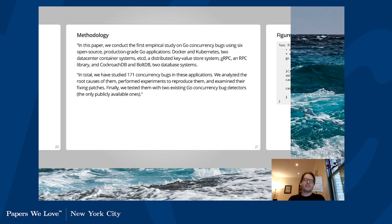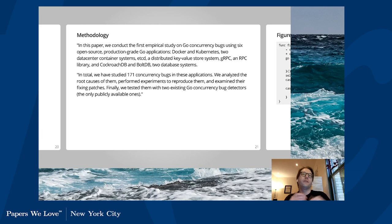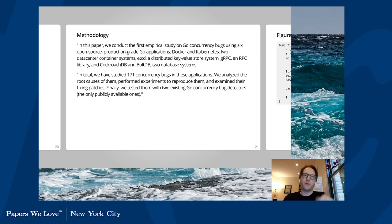They found 171 concurrency bugs in these applications, analyzed the root causes, performed experiments to reproduce them, and examined the patches that fixed them. They then tested two existing concurrency bug detectors to see if they could catch them. The method is not to go through code websites and find bugs, but to look at bugs that have been found in public sources and look at how they were fixed. They're relying on the quality of the community who found bugs in the first place — which explains why they chose large code bases with more eyeballs catching bugs.